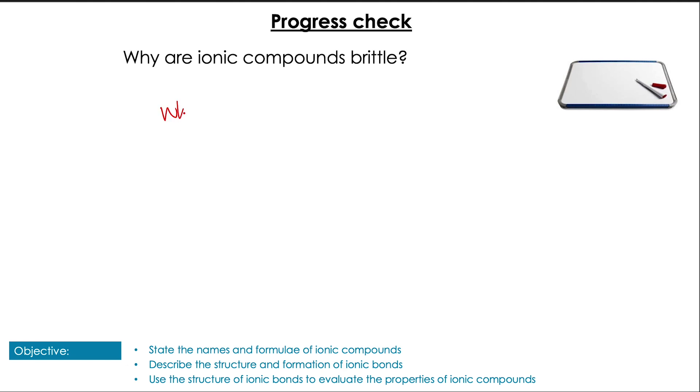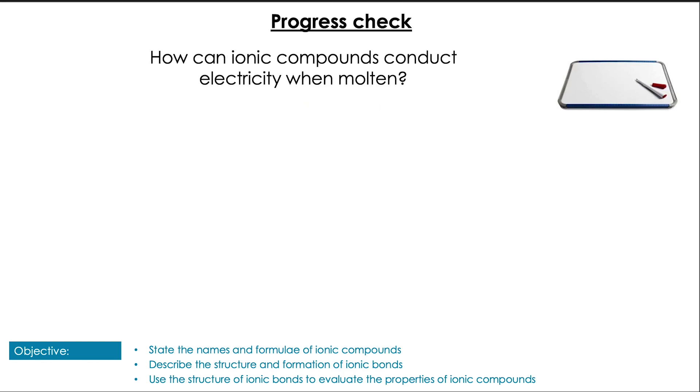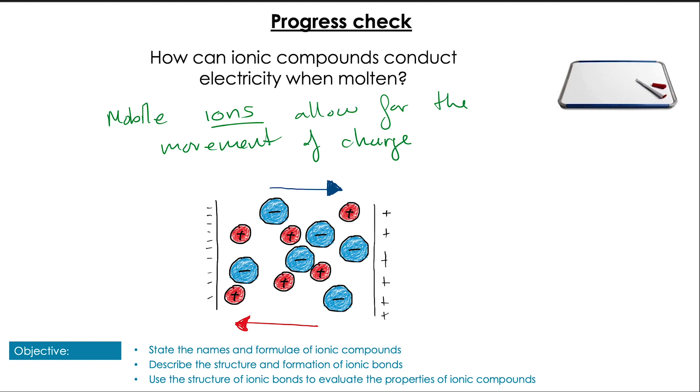Hopefully you remembered that because we have that alternating positive and negative lattice structure, when we shift the layers across each other, we end up with ions of the same charge lined up. When that happens, they have a repulsive force that causes a break in the crystal structure. Last question: how can ionic compounds conduct electricity when molten? Pause and go. Hopefully you remembered that when we have a molten or dissolved ionic compound, we have mobile ions. Mobile ions allow for the movement of charge, which is electricity.